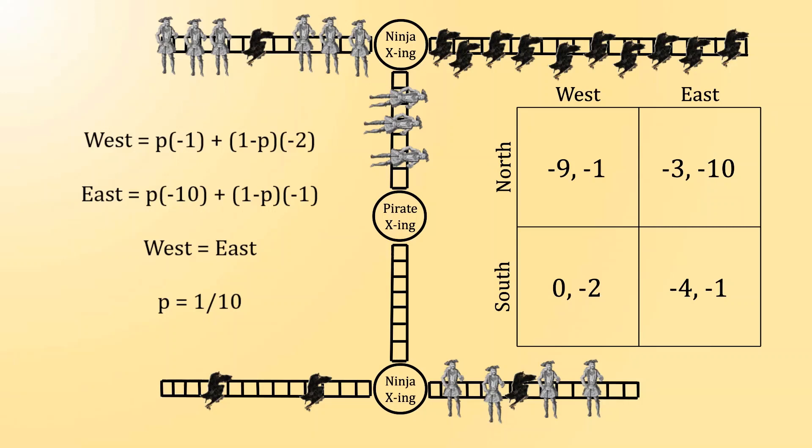The pirate is not going south the majority of the time to avoid the pirates that are up top. Instead, he is choosing to go south quite a bit to punish the ninja for the temptation to try to go west.